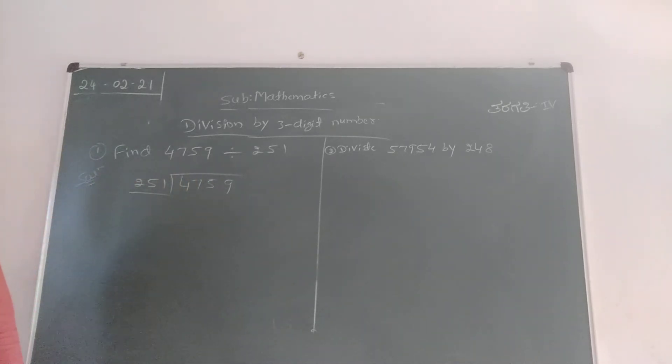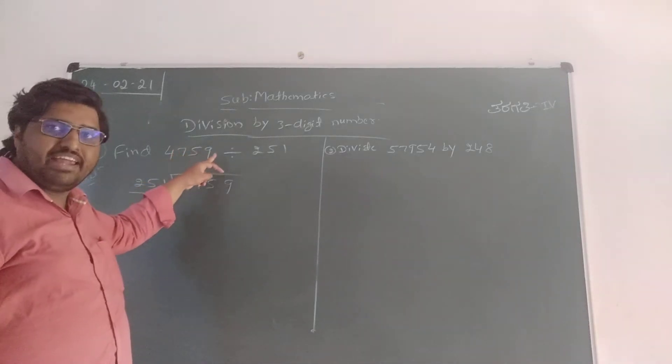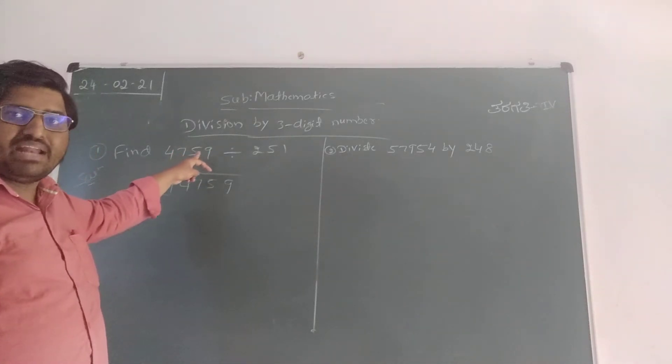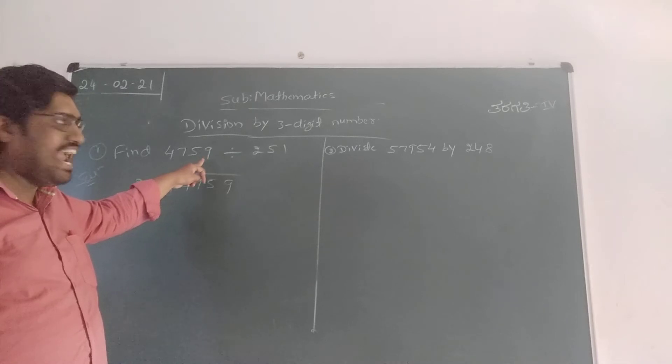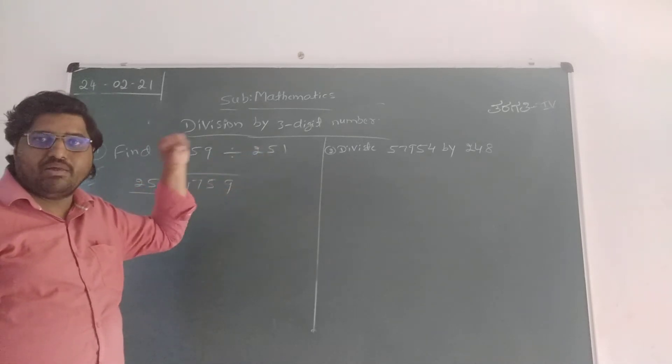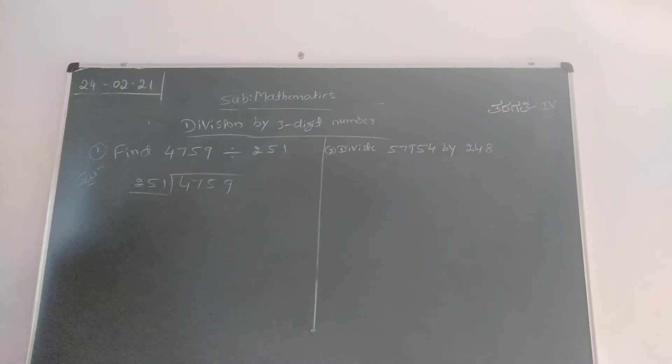How to identify which is the dividend? Yes, the bigger number 4759 is the dividend, and the divisor is 251. Now we are going to find the quotient and remainder.